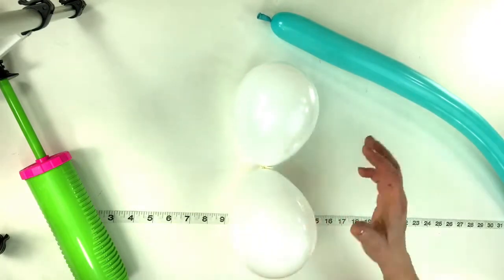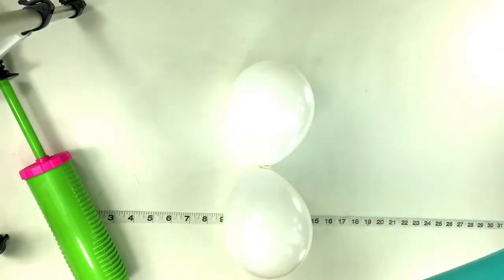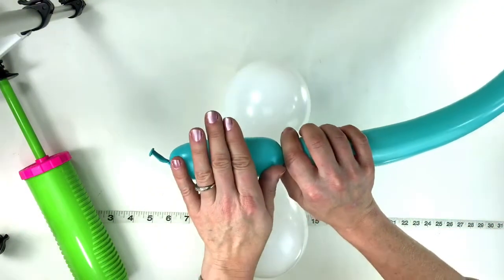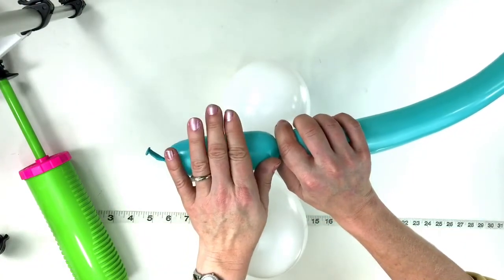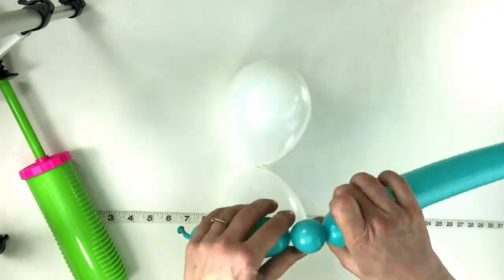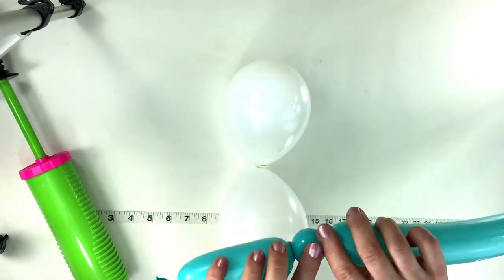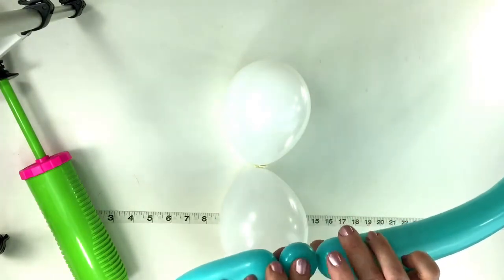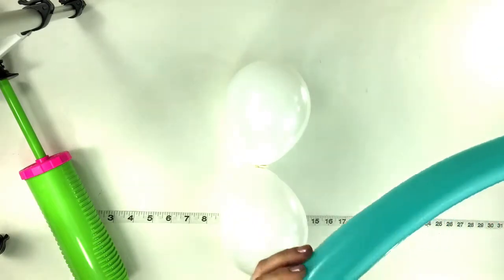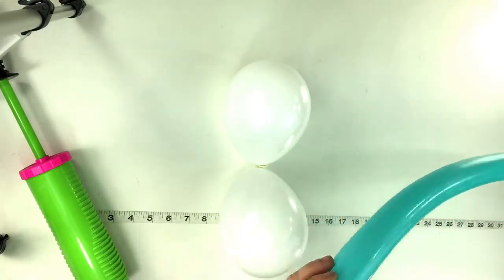Then take your 260 and inflate that with about a five finger bubble. Twist it. It doesn't have to be exact. Then twist a little cherry tomato size bubble, maybe about one and a half fingers, and pinch twist that.